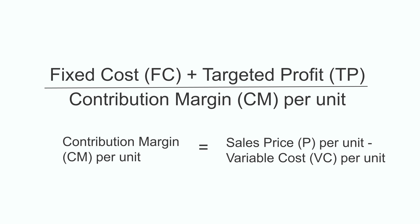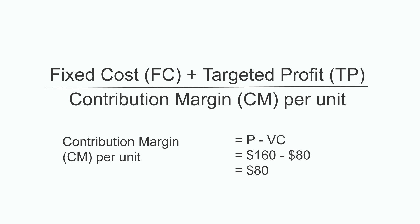The formula to calculate the required sales units to achieve a target profit is: fixed cost plus targeted profit, divided by contribution margin per unit. First, we have to calculate the contribution margin per unit, which is price per unit minus variable cost per unit. In our example, price per unit is $160 and variable cost is $80. Therefore, the contribution margin is $80, which is $160 minus the variable cost of $80.